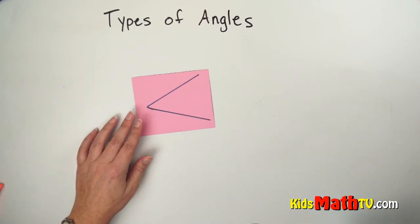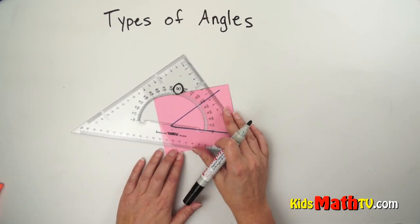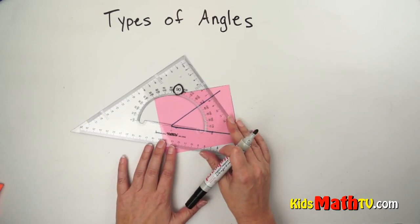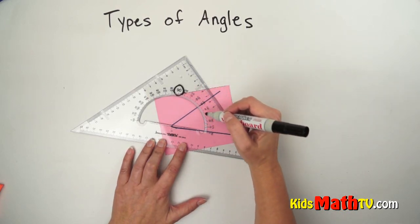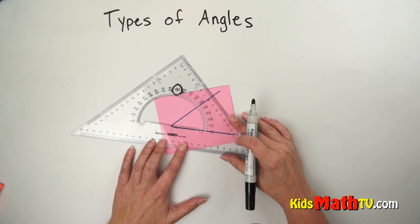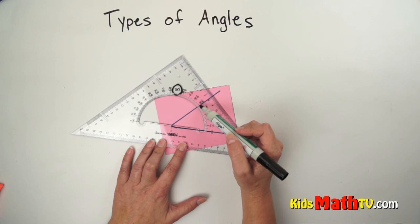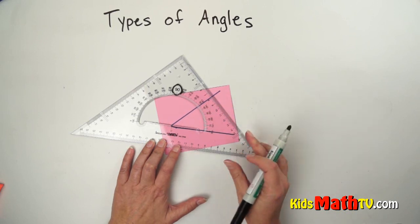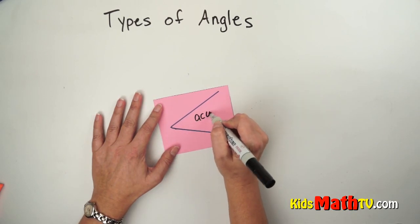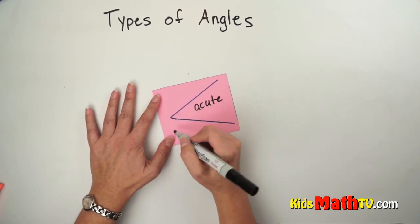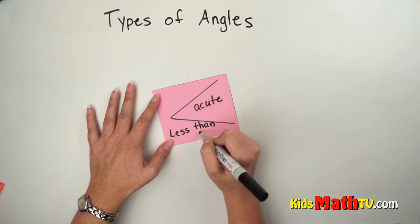We also have this type of angle. This angle is smaller — it is less than 90 degrees. If I line this up you can see that here is the 90 degrees and this angle is less than 90 degrees. This one is approximately 47 degrees, but it is less than 90 degrees, so we call this an acute angle — less than 90 degrees.